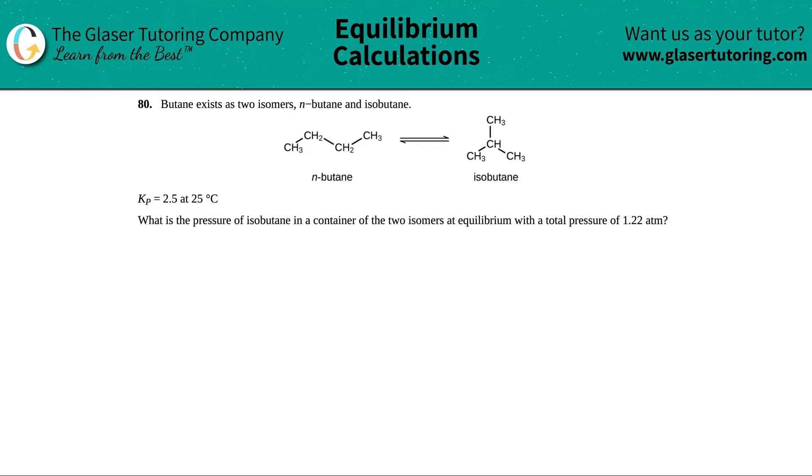Butane exists as two isomers, n-butane and isobutane, and we have this reaction. The Kp is 2.5 at 25°C. What is the pressure of isobutane in a container of the two isomers at equilibrium with a total pressure of 1.22 atm?